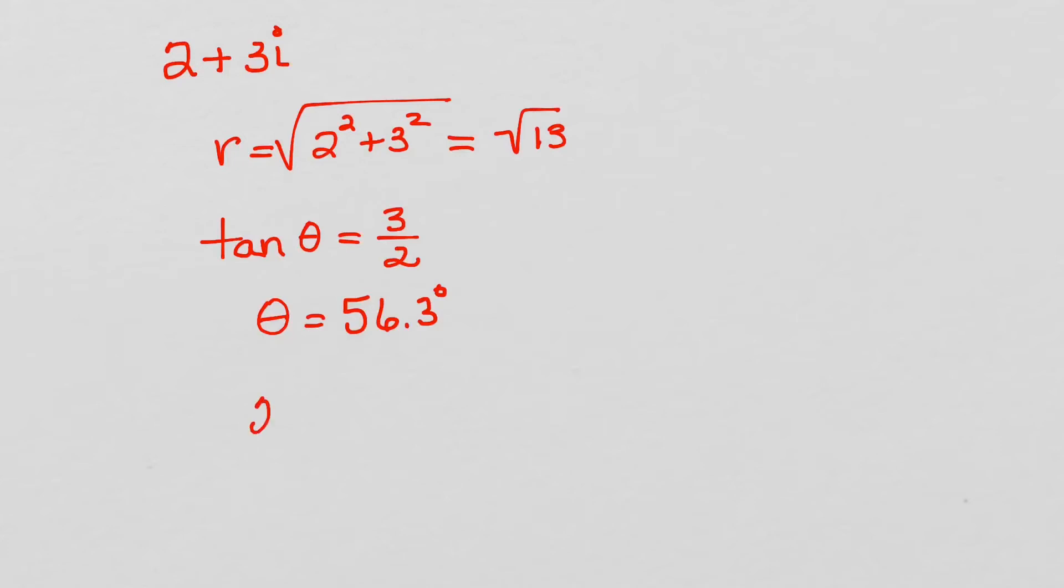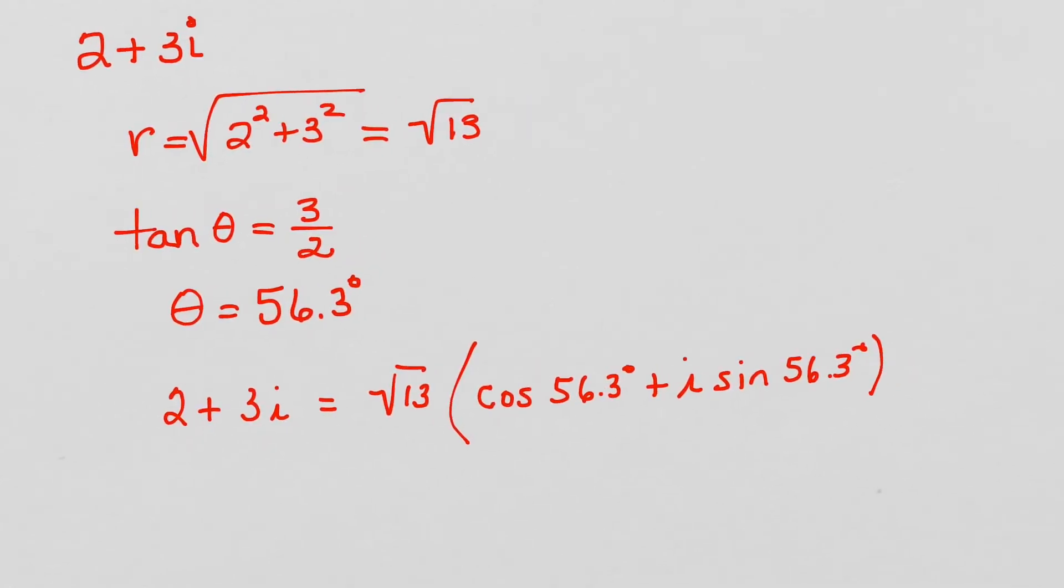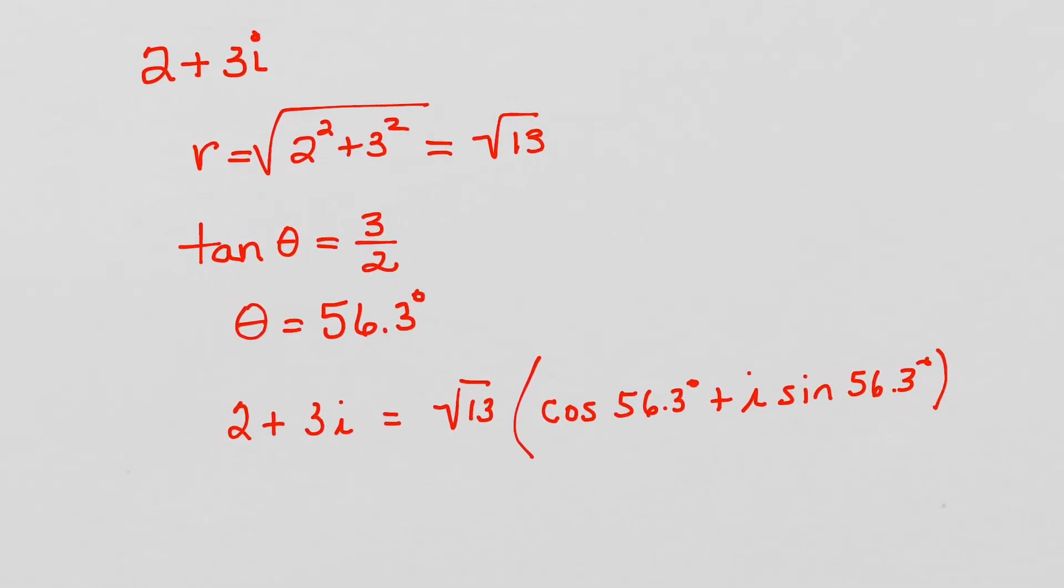So now I know that 2 plus 3i is equal to square root of 13 times cosine of 56.3 degrees plus i sine 56.3 degrees. So that's my first value, that's A.